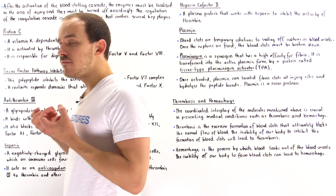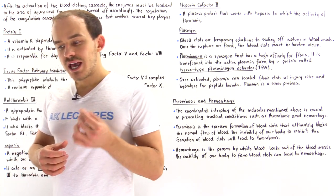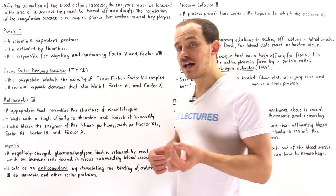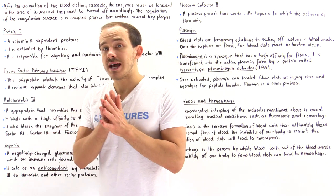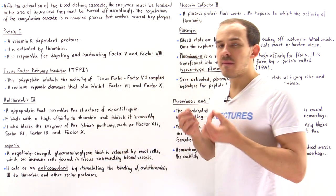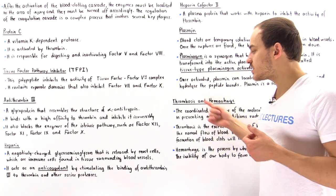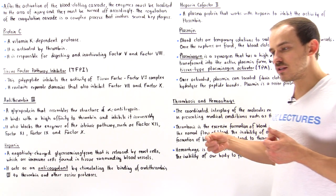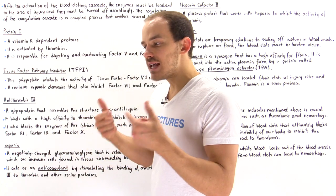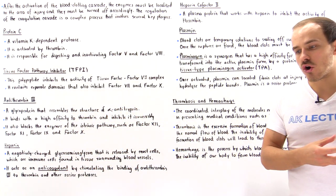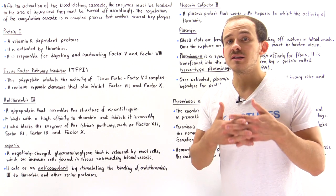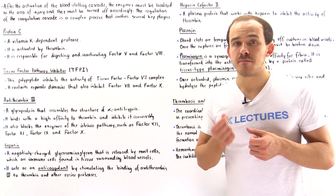Blood clots can be very beneficial. But on the other hand, if we form too many blood clots, or if we can't break down the blood clots properly, or if those blood clots escape that localized area where the injury took place, that can lead to many problems. One problem is thrombosis — the process by which we form blood clots. If these blood clots are formed excessively, they can escape into the cardiovascular system and aggregate at the wrong place, blocking the flow of blood. This is known as an embolism.